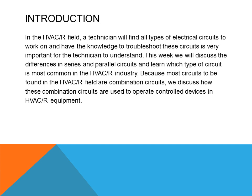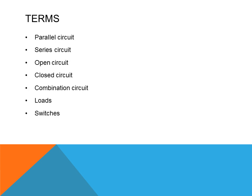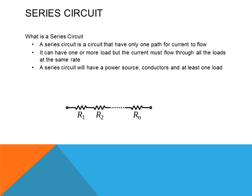This week we will discuss the differences in series and parallel circuits and learn which type of circuits is most commonly used in the HVAC industry. Because most circuits found in the HVAC field are combination circuits, we will discuss how these combination circuits are used to operate and control devices. Key terms to cover this week include: parallel circuits, series circuits, open circuit, closed circuit, combination circuit, loads, and switches.